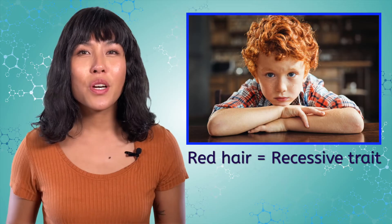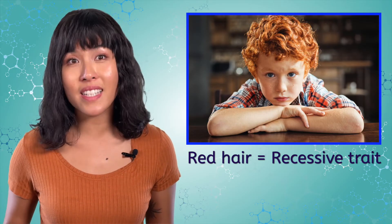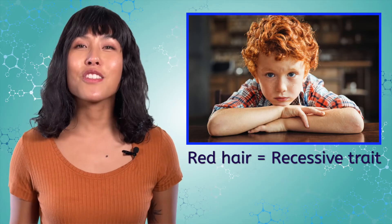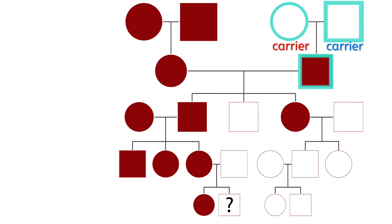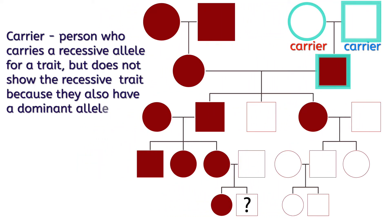It turns out that red hair is a recessive trait, so to have red hair you have to get a red hair allele from both mom and dad. But that doesn't always mean that mom and dad both had red hair. Notice on the top right side of our pedigree, two non-red-haired parents had a red-haired son. This is because both parents were carriers. Being a carrier means that you carry a recessive allele for the trait, but you don't show the recessive trait because you also have a dominant allele, so you show the dominant trait.